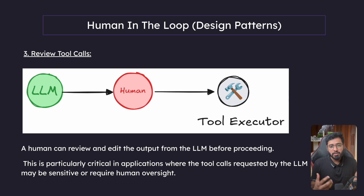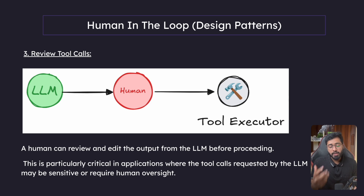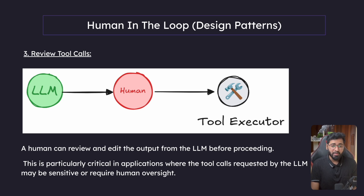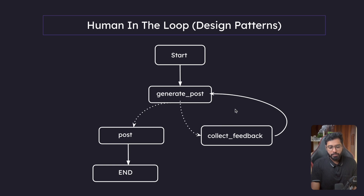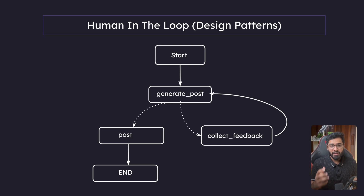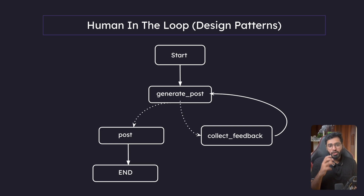Basically the graph flow execution comes in a certain direction, and depending on whether the human says yes or no, we either direct the flow to the left or to the right. I've prepared a very simple, intuitive example: a simple agent that creates LinkedIn content. If the human is happy with it, it talks to the LinkedIn API and creates a draft. If not, the human can provide feedback, the agent iterates on it, and the loop continues.